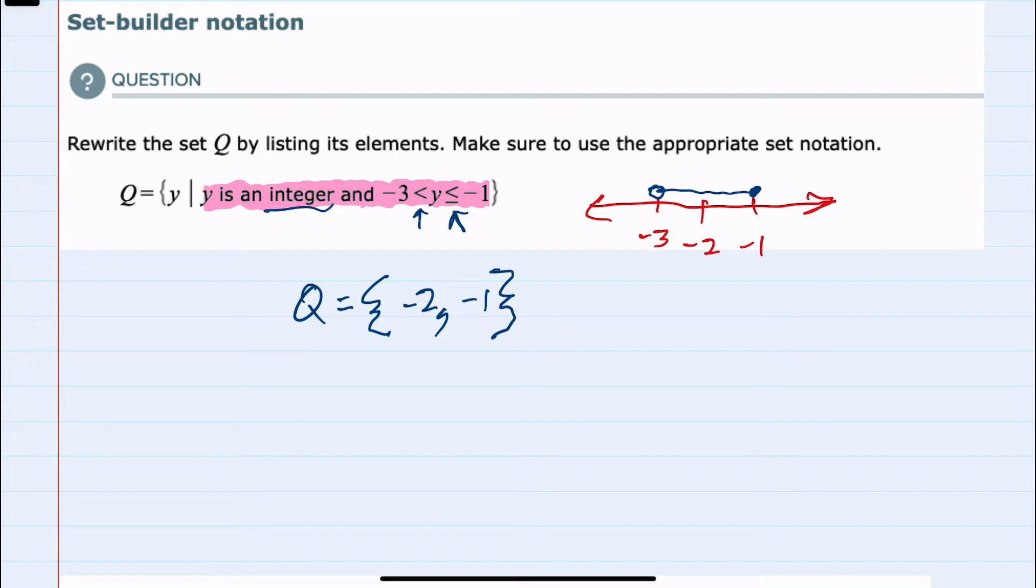And again, negative 1 is included because it does have the 'equal to' in the inequality.